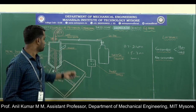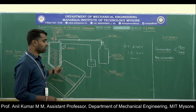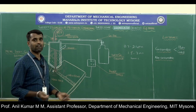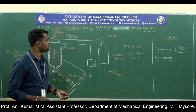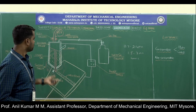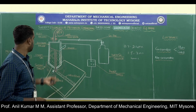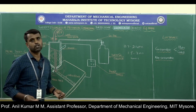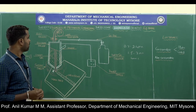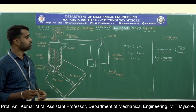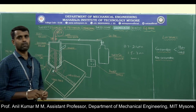Coming to the advantages: the MIG welding process is a fast and economical process. We are not using any flux, so there is no slag formation and a clean welding joint is produced. The process can be automated, and MIG welding is suitable for both thin and thick workpieces. The weld deposition rate is very high.